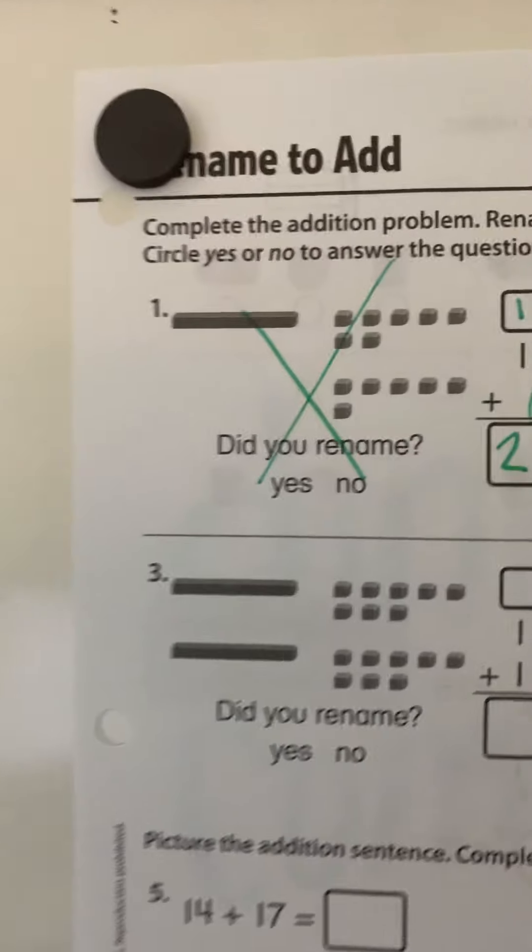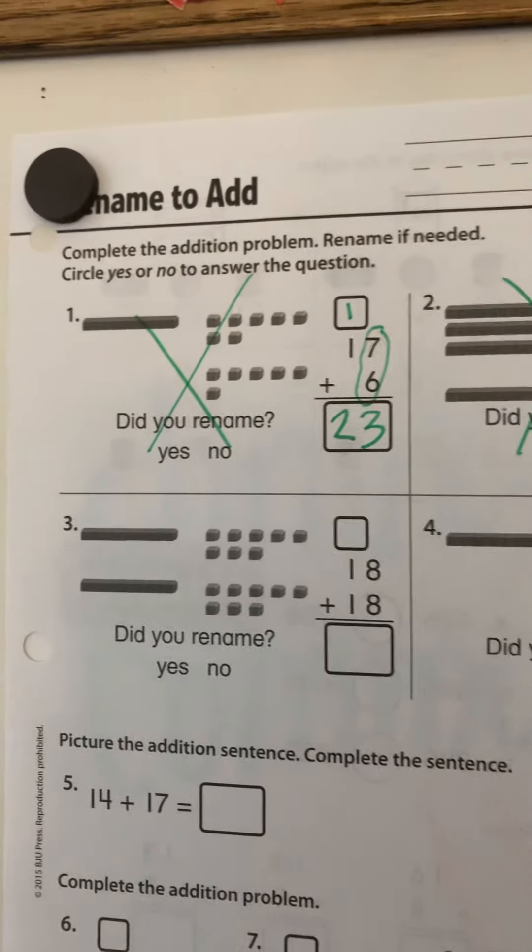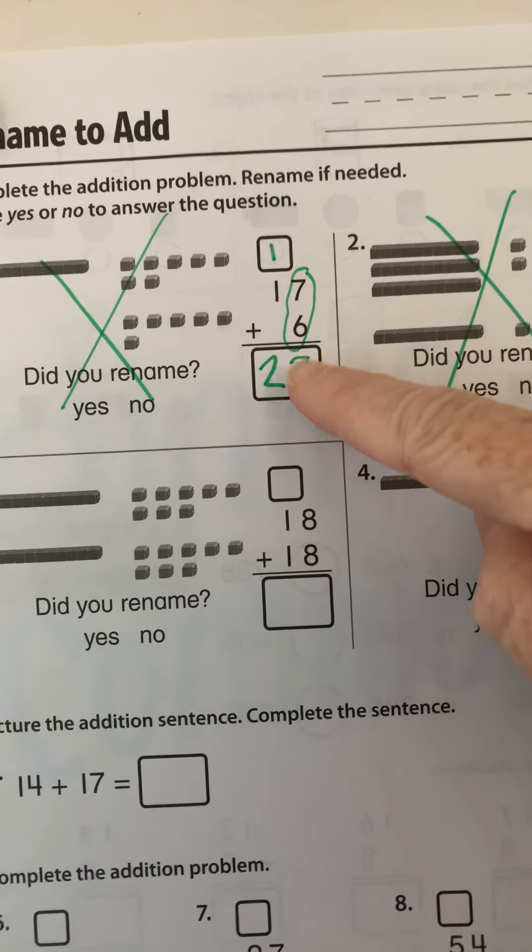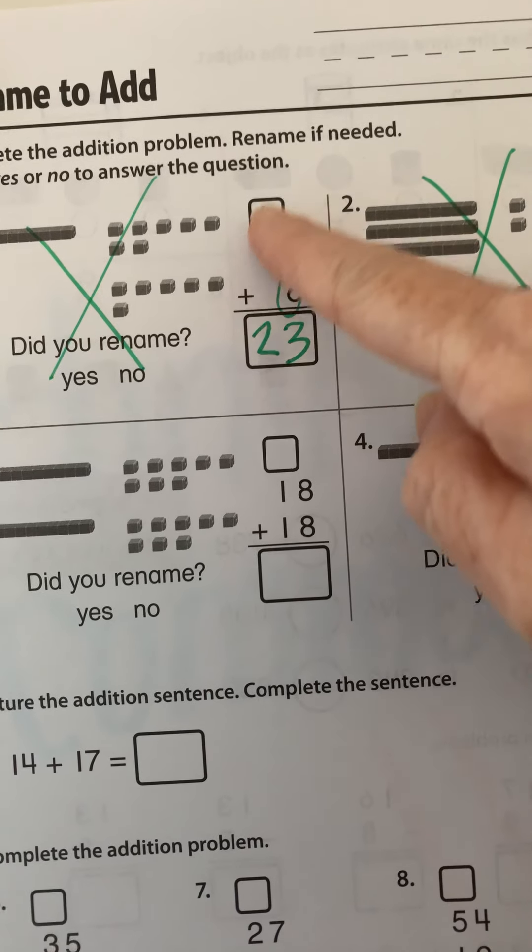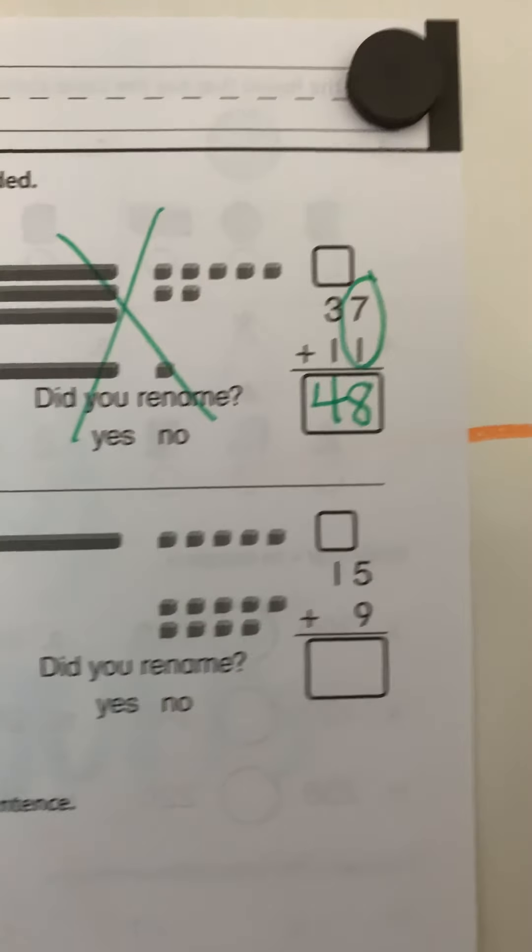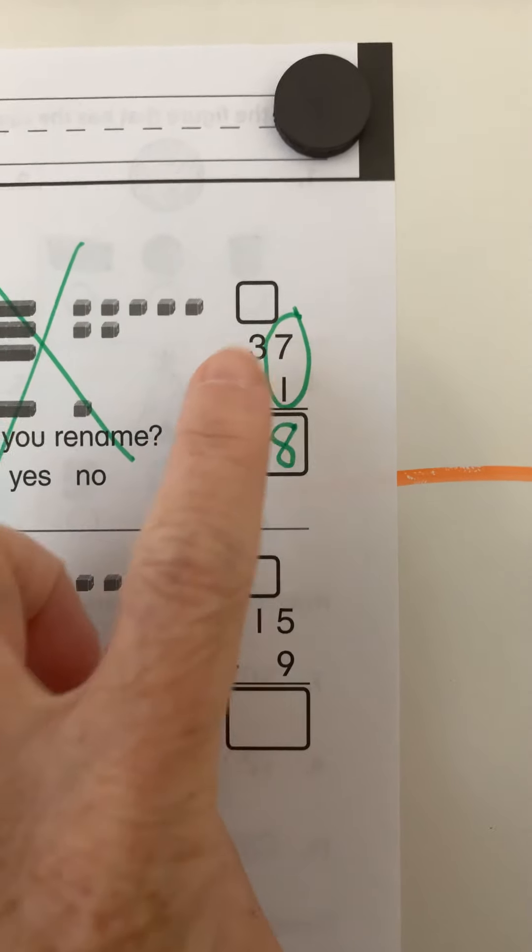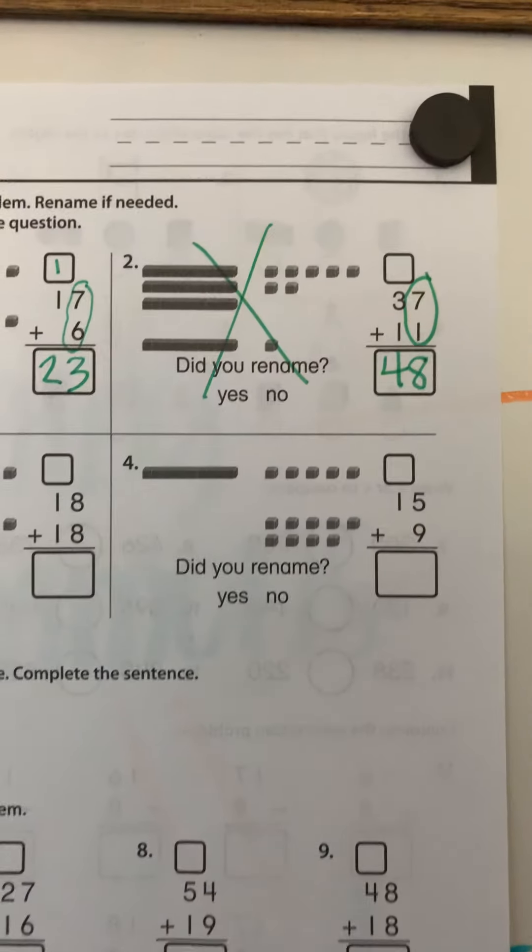So I'm going to flip this around because I'm so afraid that you guys can't see it the right way. Alright, so see for this one, we had to carry because seven plus six is 13. So we put the three here and the one up there, and then we added one plus one is two. This one is different because seven plus one is eight. There's nothing that I need to carry. And then three plus one is four. Okay, does everybody see that?